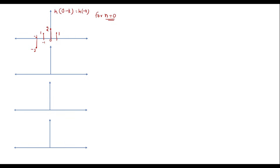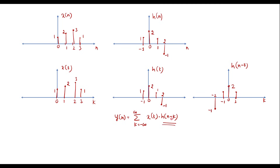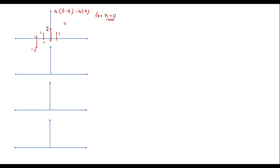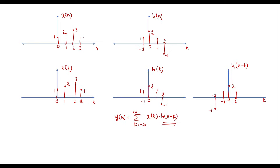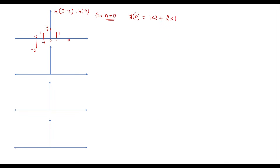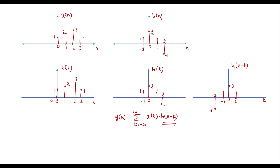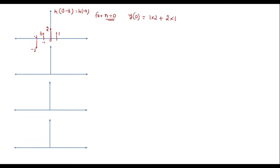According to the convolution formula, we first consider n equal to 0. For n equal to 0, h of 0 minus k is the same as h of minus k. We multiply this with x of k: at k equal to 0, x is 1 and h of minus k is 2, giving 1 times 2. At k equal to 1, x is 2 and h is 1, giving 2 times 1. At k equal to minus 1, x is 0 so the contribution is 0. Therefore y of 0 equals 2 plus 2, which is 4.